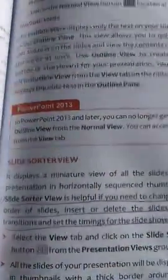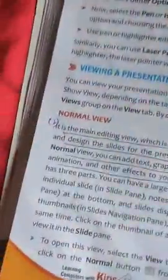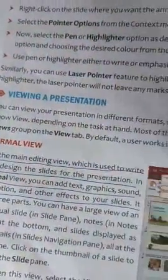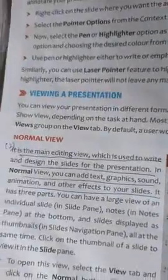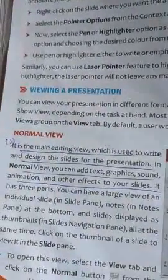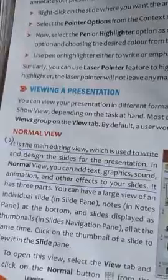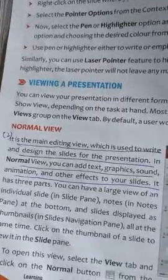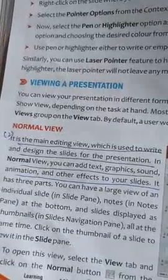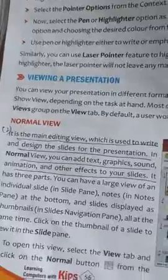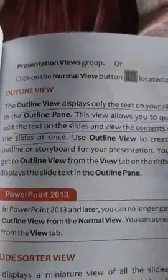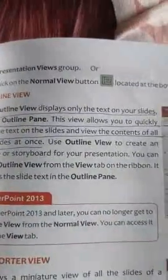Question 2: State the difference between Normal view and Outline view. Normal view is the main editing view which is used to write and design slides for the presentation. In Normal view, we can add text, graphics, sound, animation, and other effects to your slides. In Outline view, it displays only the text of your slides.